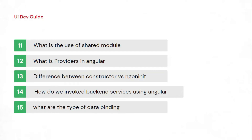The next question is constructor versus ngOnInit. The constructor gets triggered first because Angular uses TypeScript classes and the constructor is a class method. For ngOnInit, you inject services and dependencies in the constructor, while ngOnInit ensures the component and lifecycle have started — so that's where you assign bound property values or make API calls.